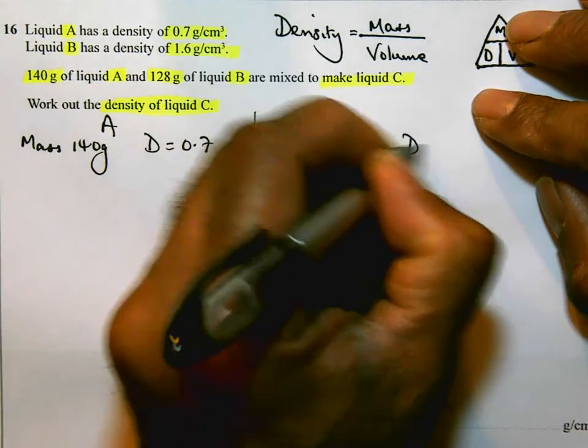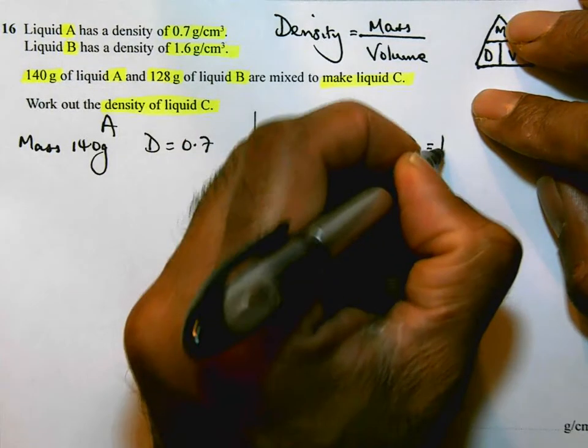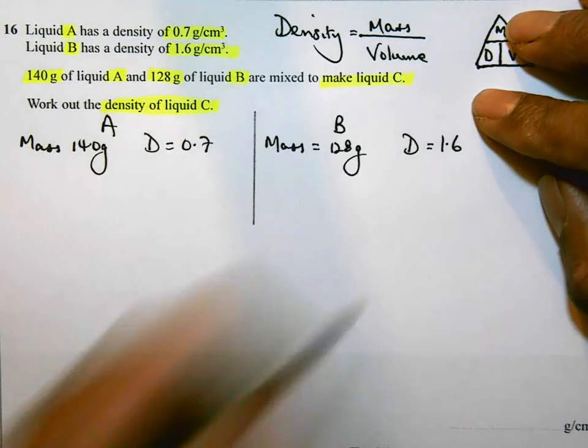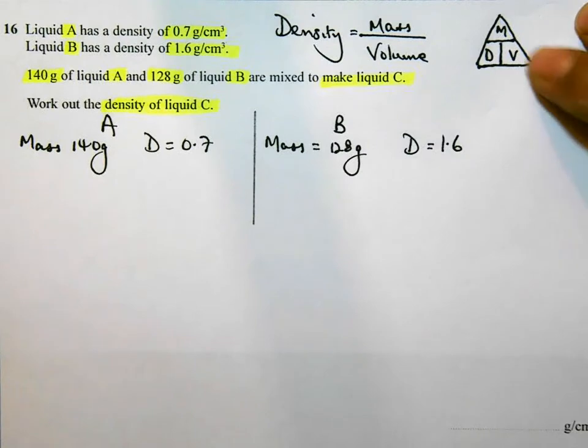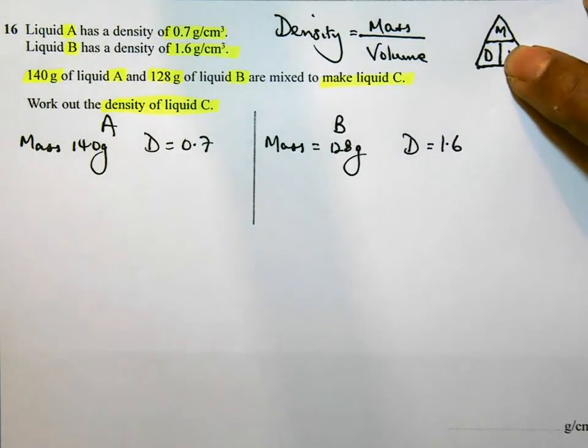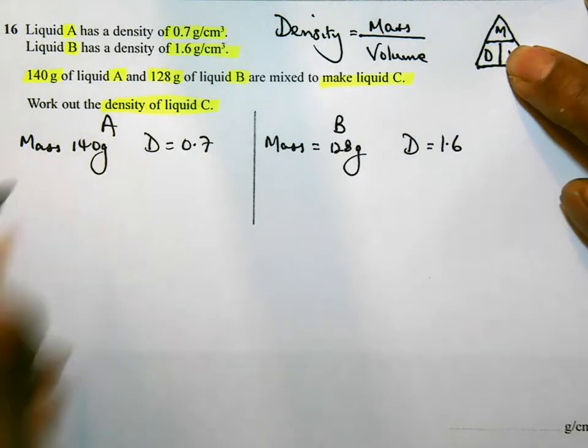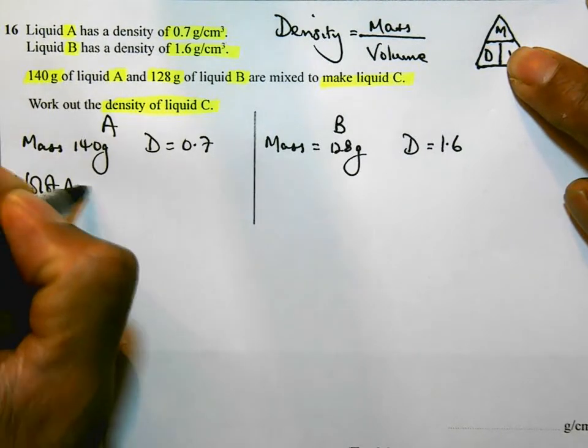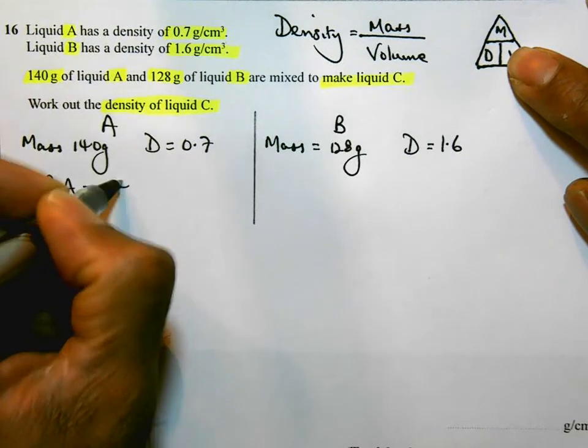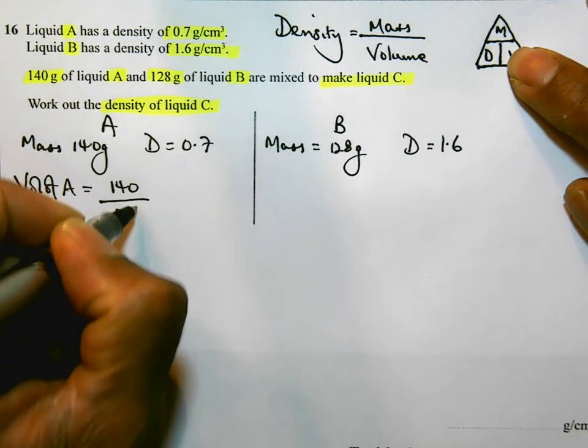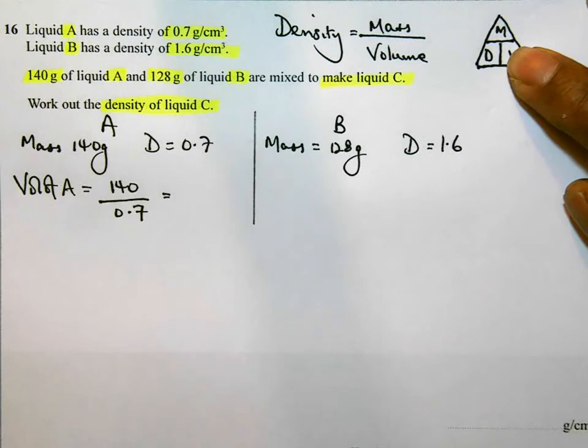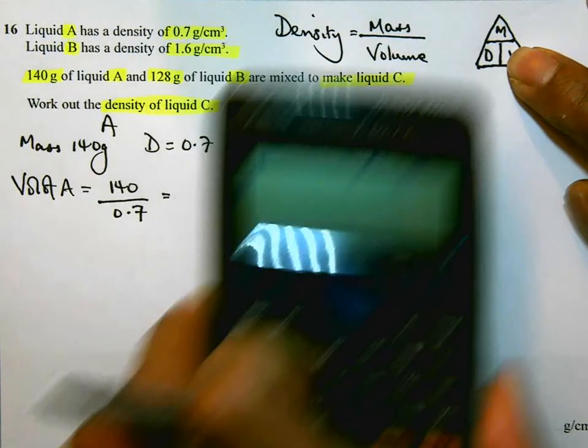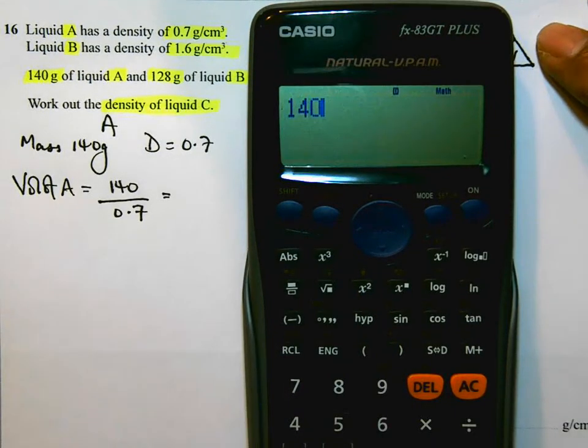So to work out volume, if I cover up volume in my density triangle, it is mass divided by density. So the volume of A is going to be 140 divided by 0.7. If I get my calculator, I will do that. 140 divided by 0.7 equals 200. And that is going to be centimeters cubed.